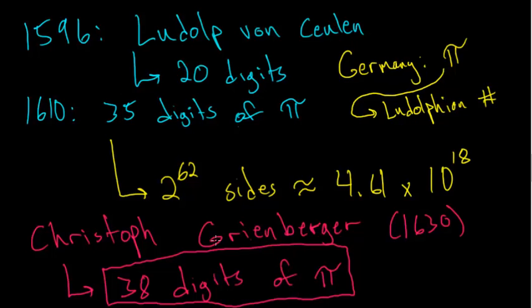The main reason that people stopped using this method was that around this time, in the 1500s and 1600s, people started to discover infinite series and infinite product representations of pi.